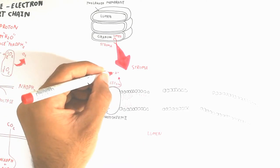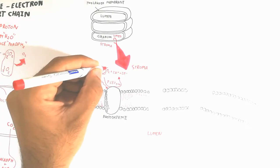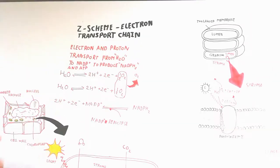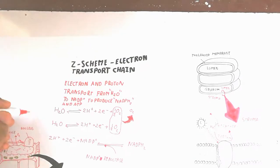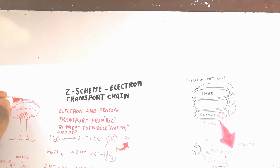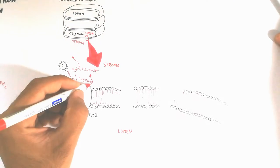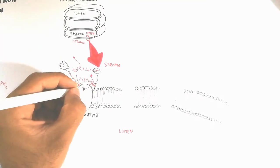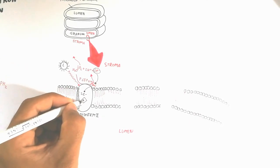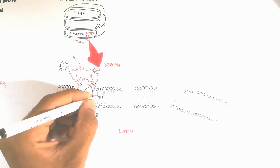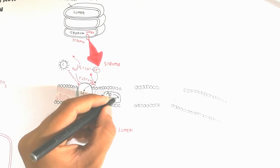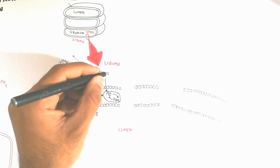A photon in the 680 nanometer range excites the first electron. Oxygen is released from water splitting. The Mn (manganese) protein carries the electron from water to the reaction center. Inside Photosystem 2, a special pair of magnesium-containing molecules transfers electrons to plastoquinone. Plastoquinone absorbs protons from the stroma.